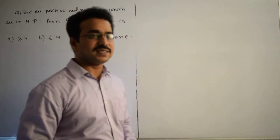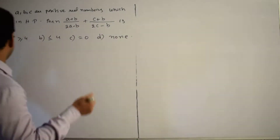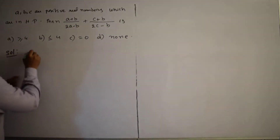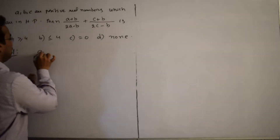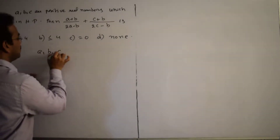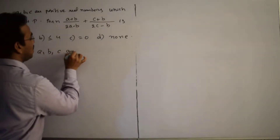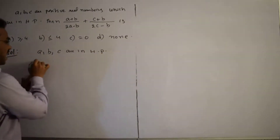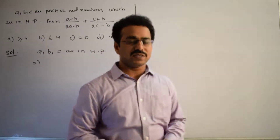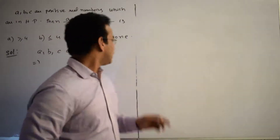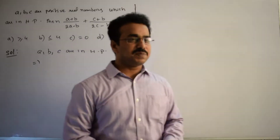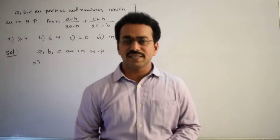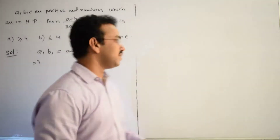Let's start with the given information. Given that A, B, C are in harmonic progression. As per the definition of harmonic progression, if A, B, C are in HP, then 1/A, 1/B, 1/C are in arithmetic progression.